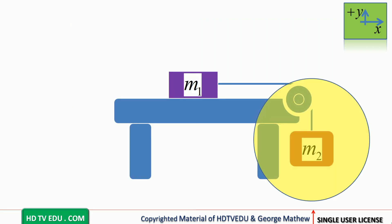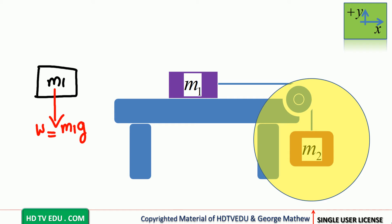We have two masses, so let's isolate mass M1 first. You have the gravitational force acting vertically down and the normal force acting vertically up, so they balance each other. There is no acceleration along the vertical — the net force along the vertical is zero. Now, you see a string; the string pulls on mass M1.